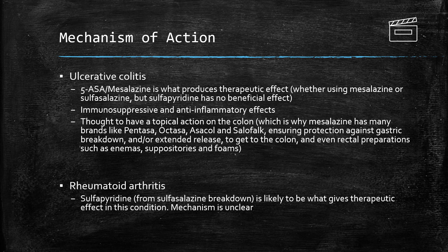In ulcerative colitis, it's the 5-ASA, or mesalazine, which produces the therapeutic effect. So we can use mesalazine directly, or we can use sulfasalazine, which gets broken down and produces mesalazine anyway. It also produces sulfapyridine, which in ulcerative colitis has no effect other than potentially causing side effects. Mesalazine has immunosuppressive and anti-inflammatory effects, though the exact mechanism of action isn't known. It's thought to have a topical action on the colon, which is why there are so many different brands that are gastro-resistant or prolonged release to ensure they reach the colon.